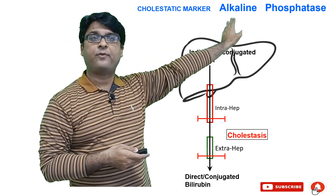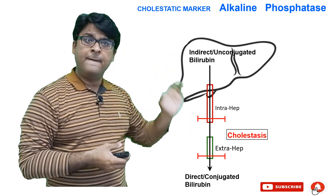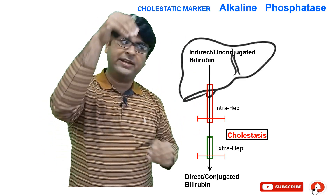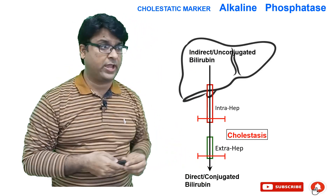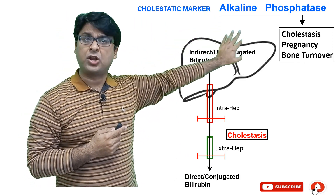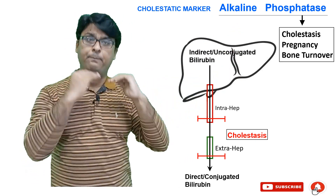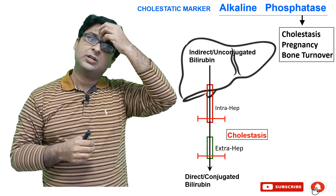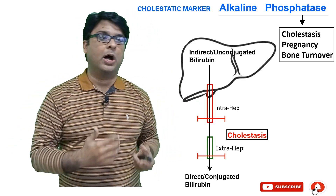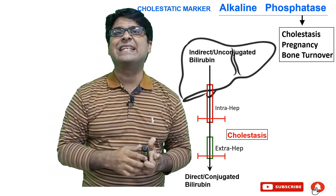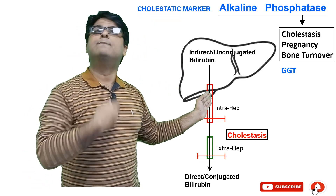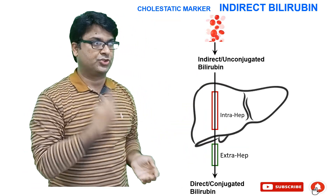Let's discuss each cholestatic marker one by one. First: alkaline phosphatase. Whenever there is cholestasis and blockage of biliary ducts, alkaline phosphatase levels go up. But it also goes up in pregnancy or with bone turnover, so alkaline phosphatase is not a very specific marker for liver disease. Therefore, sometimes GGT — which is more specific to the liver — is used instead.